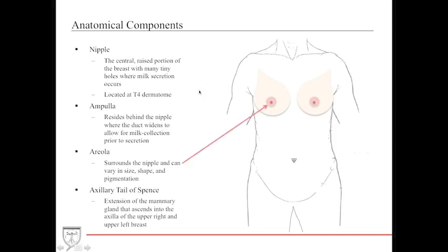The areola is a pigmented location that circumferentially surrounds the nipple and can vary in size, shape, and pigmentation based on the gender and ethnicity of the individual. The axillary tail of Spence is an extension of the mammary glands that extends into the axilla.